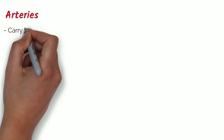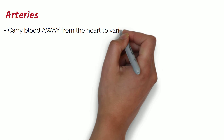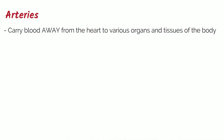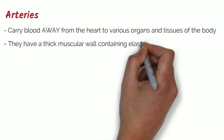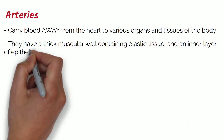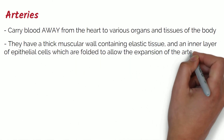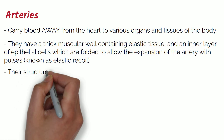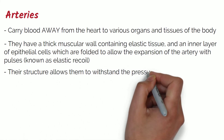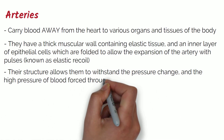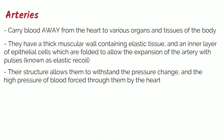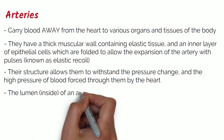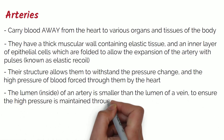The three types of blood vessels are arteries, veins and capillaries. Arteries carry blood away from the heart to various organs and tissues of the body. Arteries have a thick muscular wall containing elastic tissue and an inner layer of epithelial cells which are folded to allow the expansion of the artery with pulses — this is known as elastic recoil. This structure allows arteries to withstand pressure changes and the high pressure of blood forced through them by the heart. The lumen of the artery is smaller than the lumen of the vein to ensure high pressure is maintained throughout the vessels.